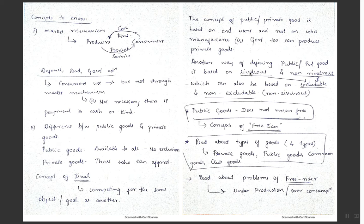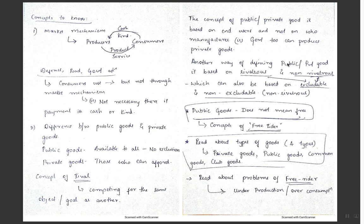Rivalrous means people are competing for something — that becomes a private good. Non-rivalrous means people are not competing for it — that becomes a public good. Similarly, excludable means it's rivalrous and a private good; non-excludable means it's non-rivalrous and a public good. Always remember: do not assume public goods are free, and do not assume public goods are produced by the government alone — private entities can also produce them.